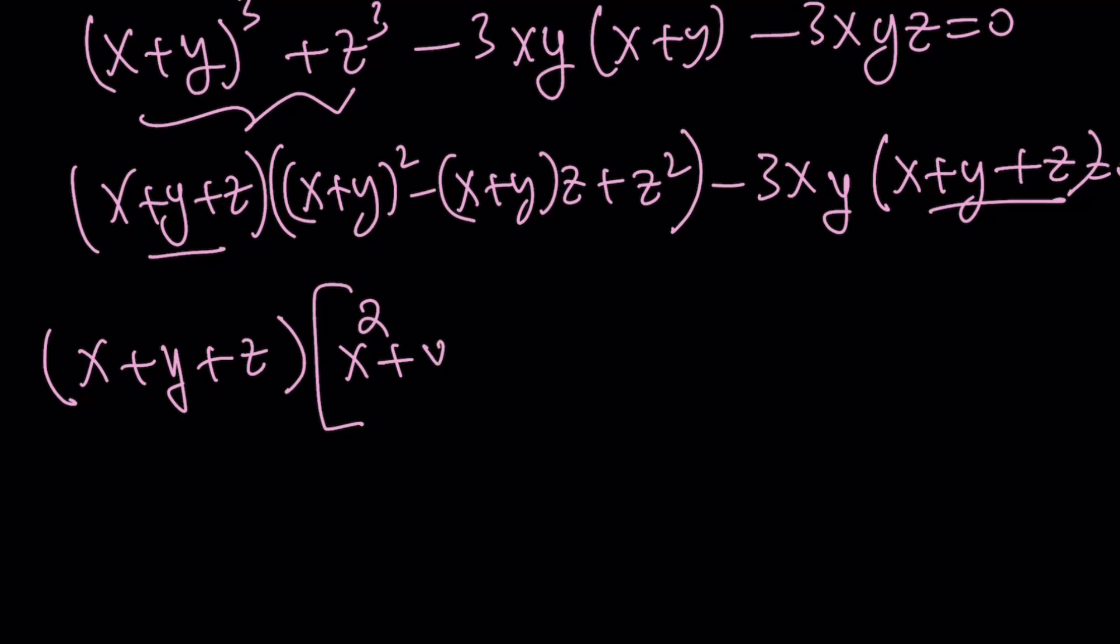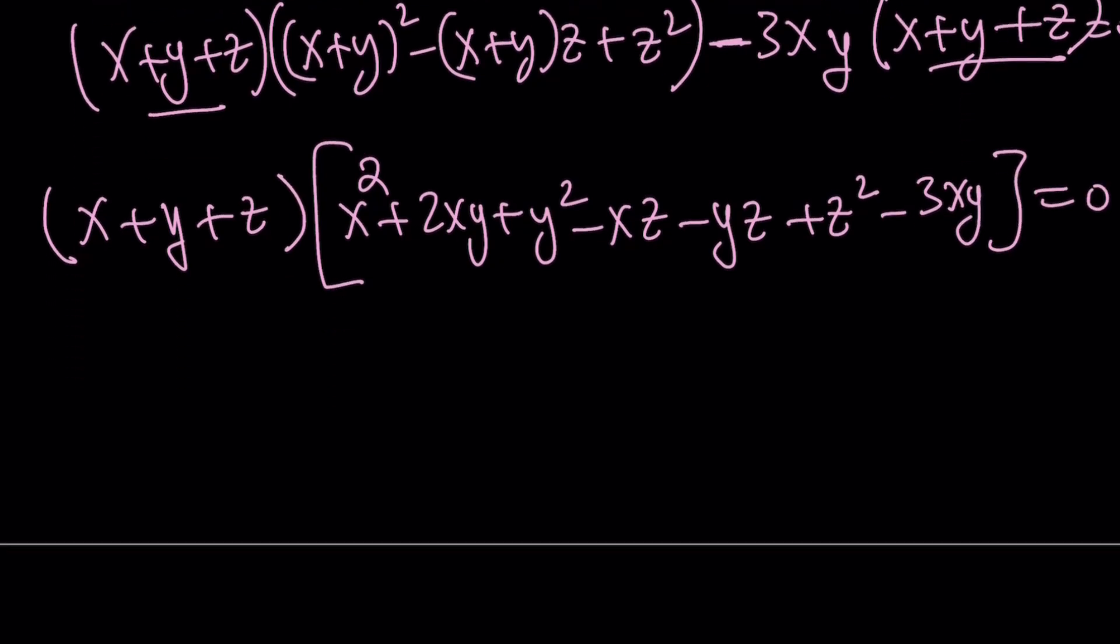x squared plus 2xy plus y squared. If you go ahead and distribute it, minus xz minus yz plus z squared. And then I have minus 3xy. Let's go ahead and put that in there and set it equal to zero. Here's what we would like to do. x plus y plus z is going to stay together. And then the rest of the expression is going to look like this.